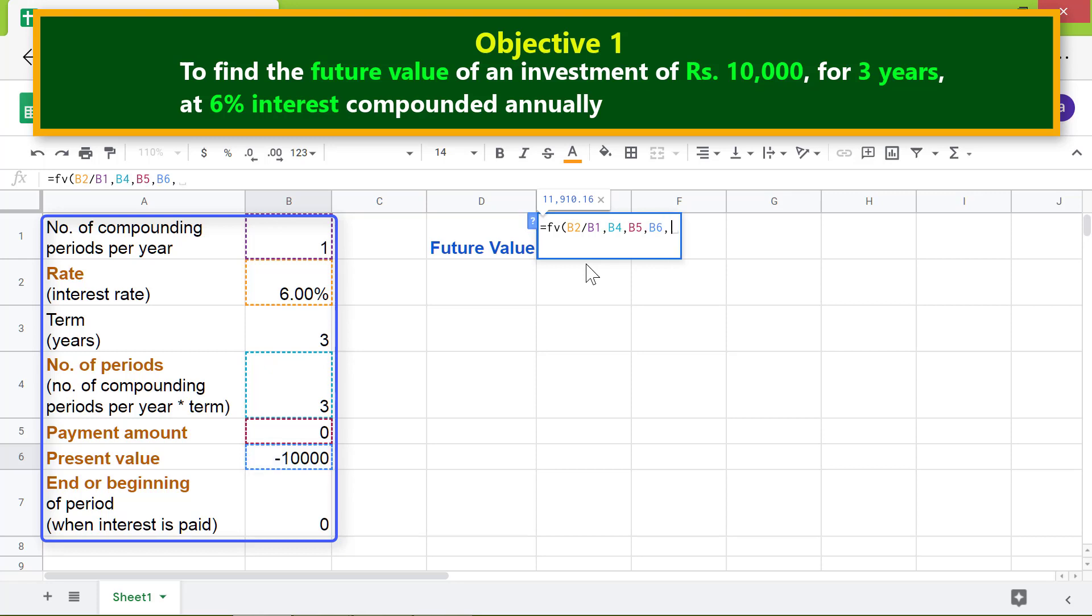Lastly, for the end or beginning, click this cell and press enter. There you go, the FV function has returned the future value of the investment made today.